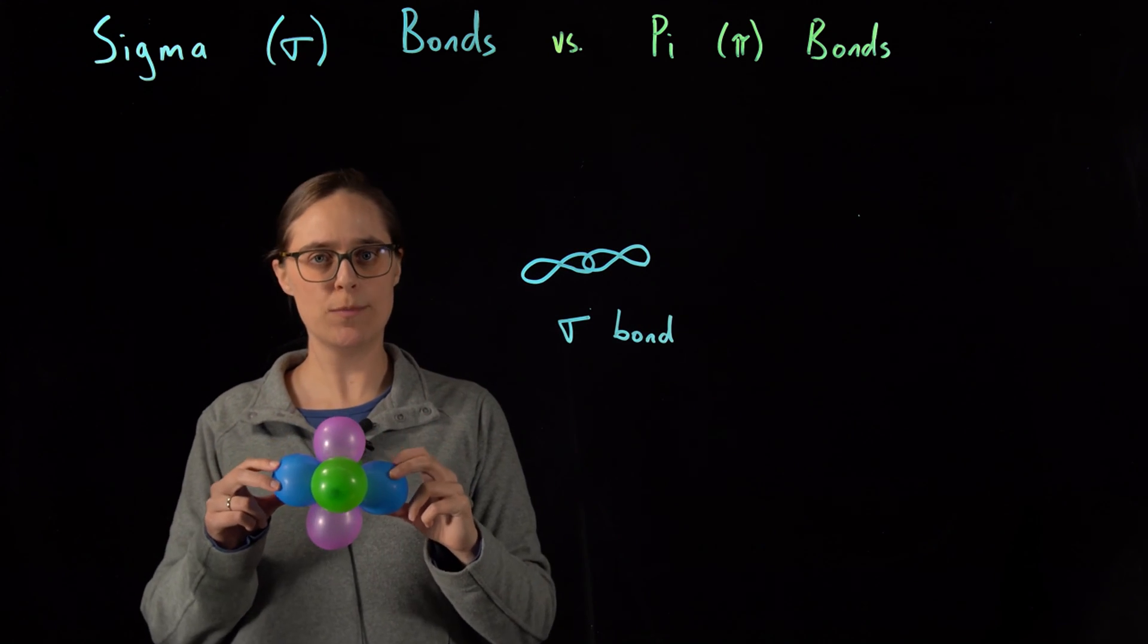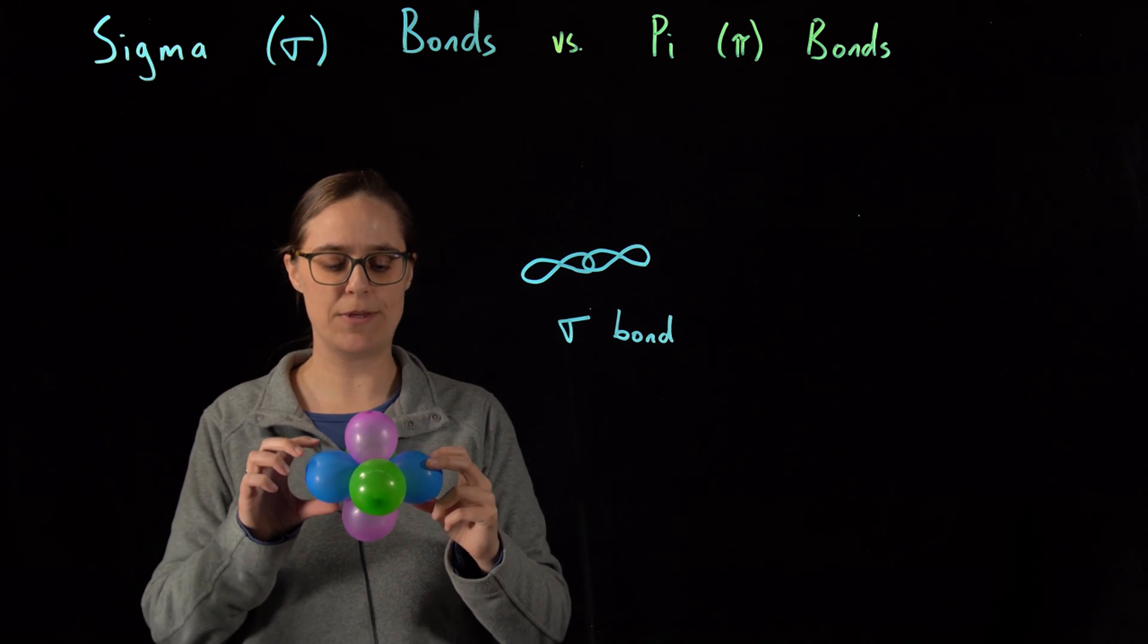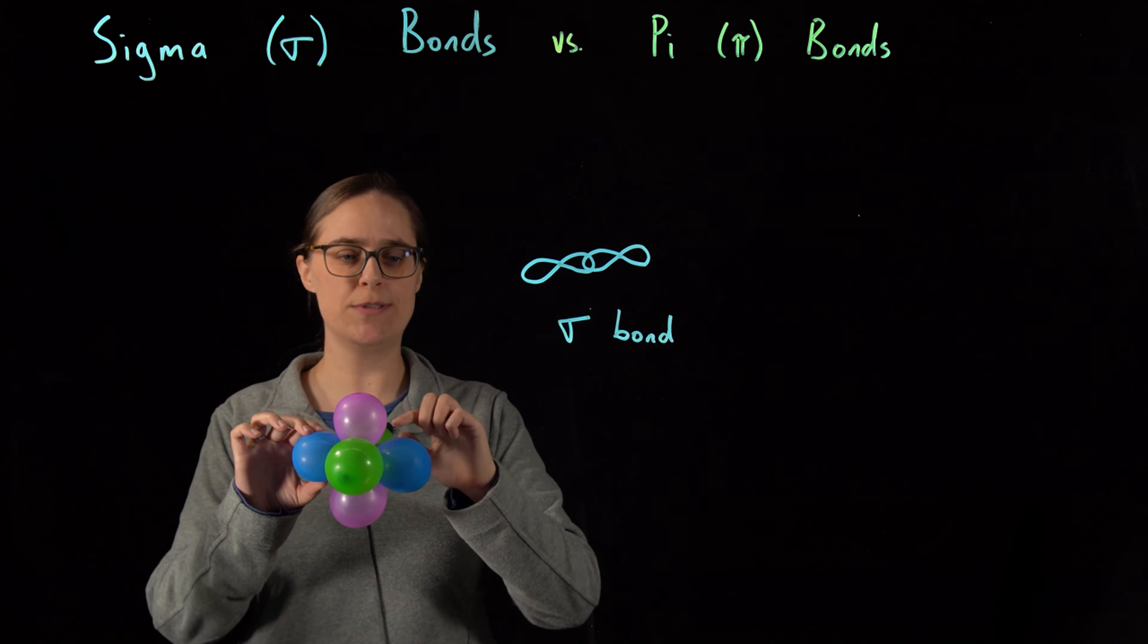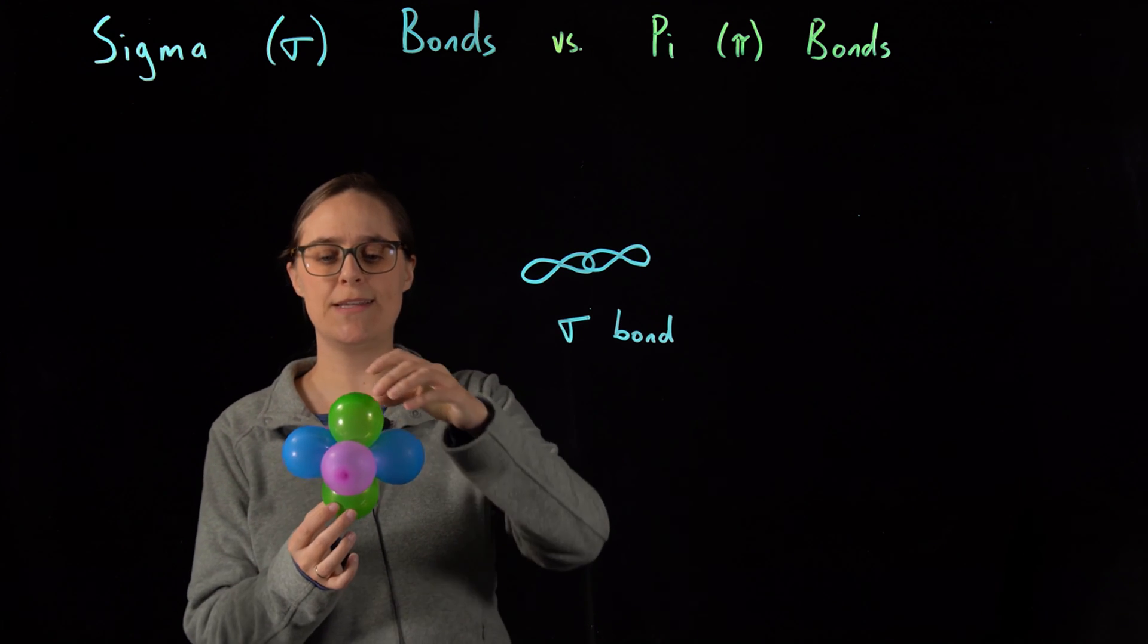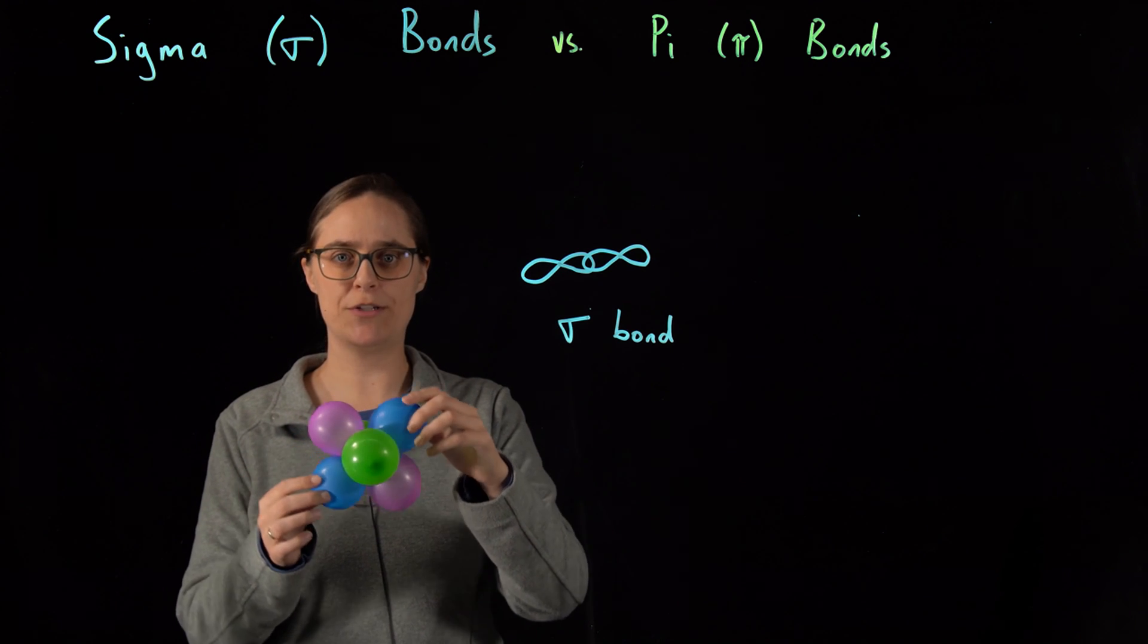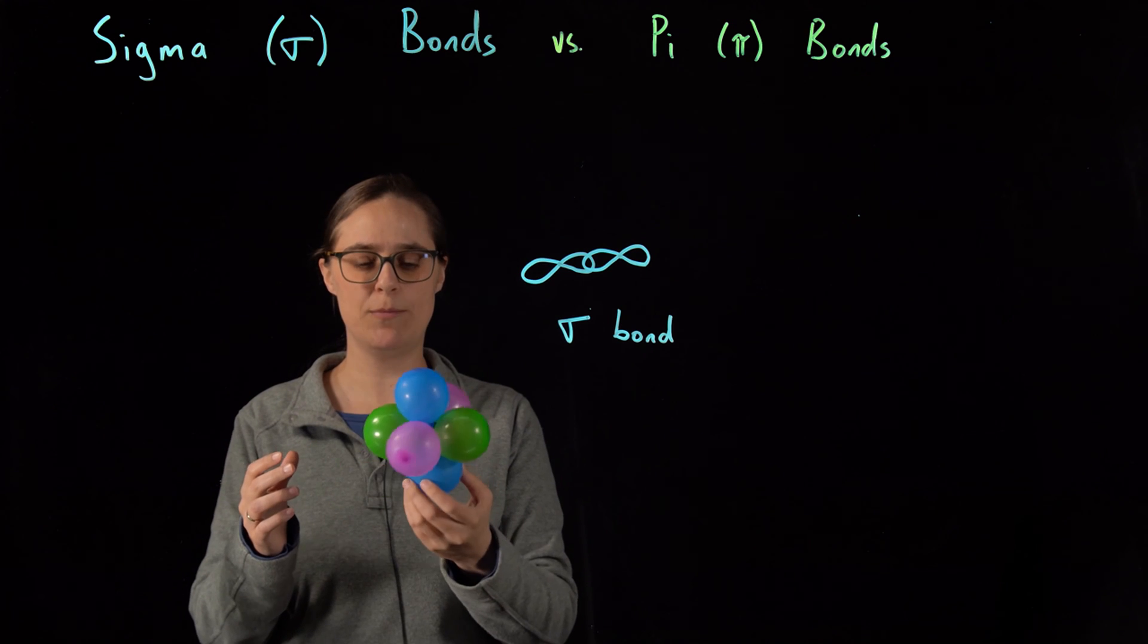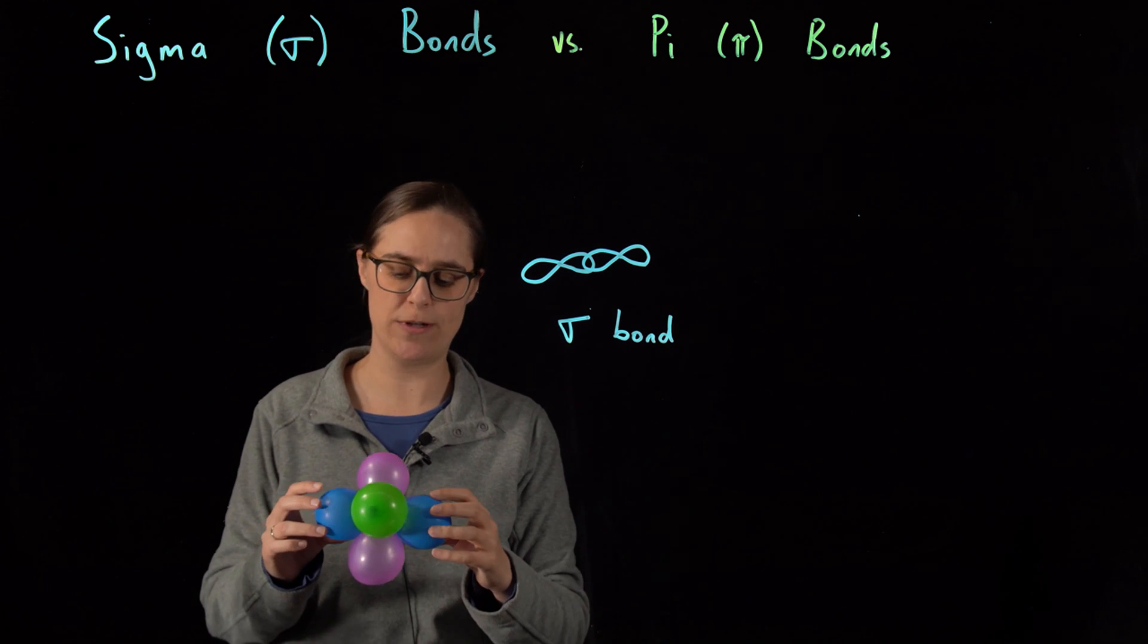Now, different orbitals on the same atom repulse each other. They don't like overlapping. So these two blue balloons, these would be one dumbbell-shaped orbital. You can see that I have a green orbital and a purple orbital, and they are all pointing in different directions. In this particular example, they happen to be 90 degrees from each other. It can differ depending on what atom we're talking about.